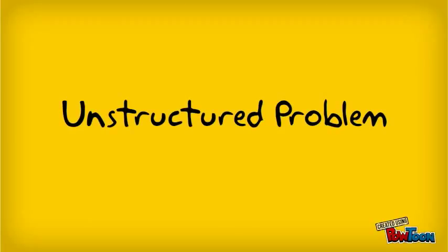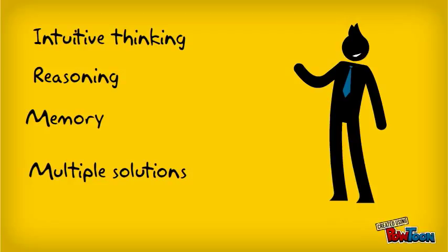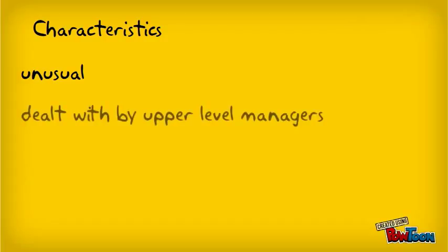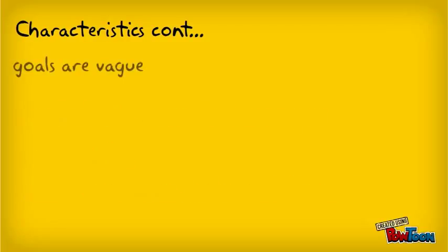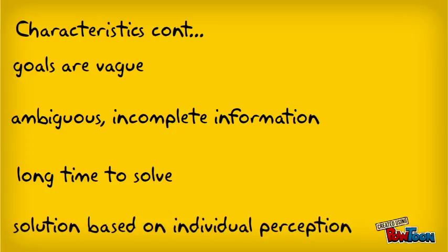In this section, we define what an unstructured problem is and describe some typical characteristics of such problems. Unstructured problems are problems that require intuitive thinking, reasoning, and memory, and do not have just one correct answer or solution. They are unusual, hence in organizations they are dealt with by upper-level managers. They are non-routine and the solution mainly relies on judgment and creativity. Their goals are vague, making them difficult to understand. Unstructured problems contain ambiguous or incomplete information and take relatively long to solve, with solutions mainly based on individual perception.